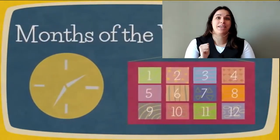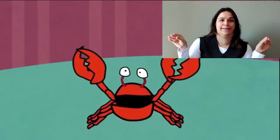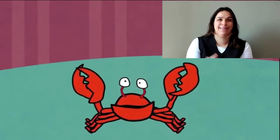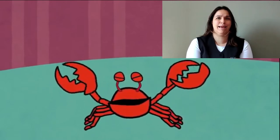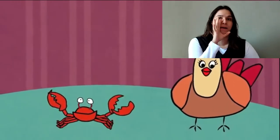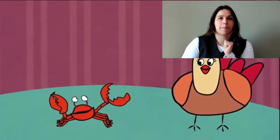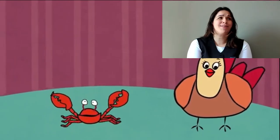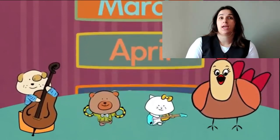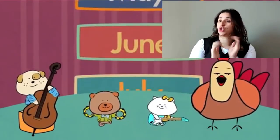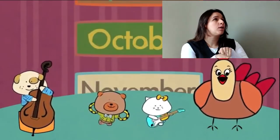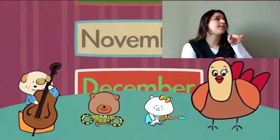Look, here we have a crab. Crab? Hello Mr. Crab. 12 months. Hello Mother Hen! January, February, March, April, May, June, July. August, September, October, November, December.